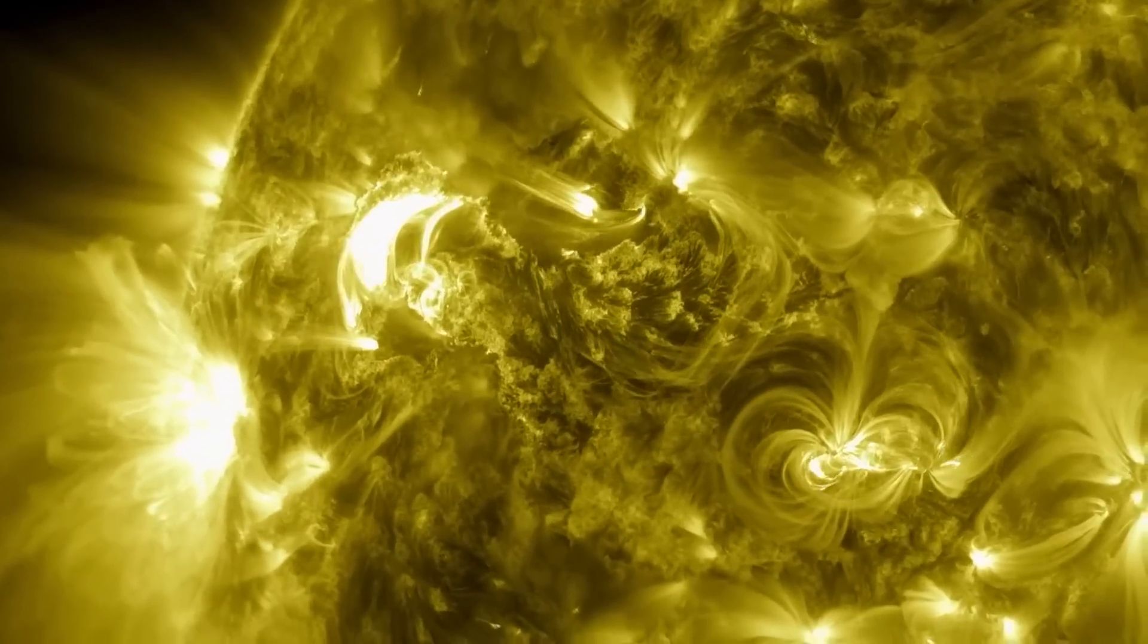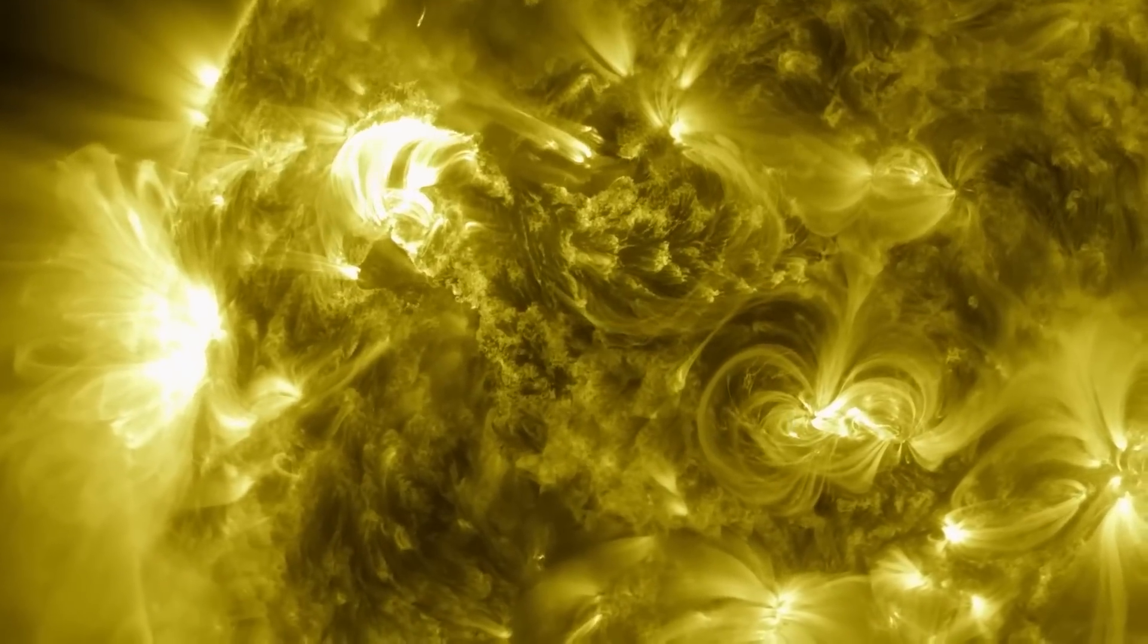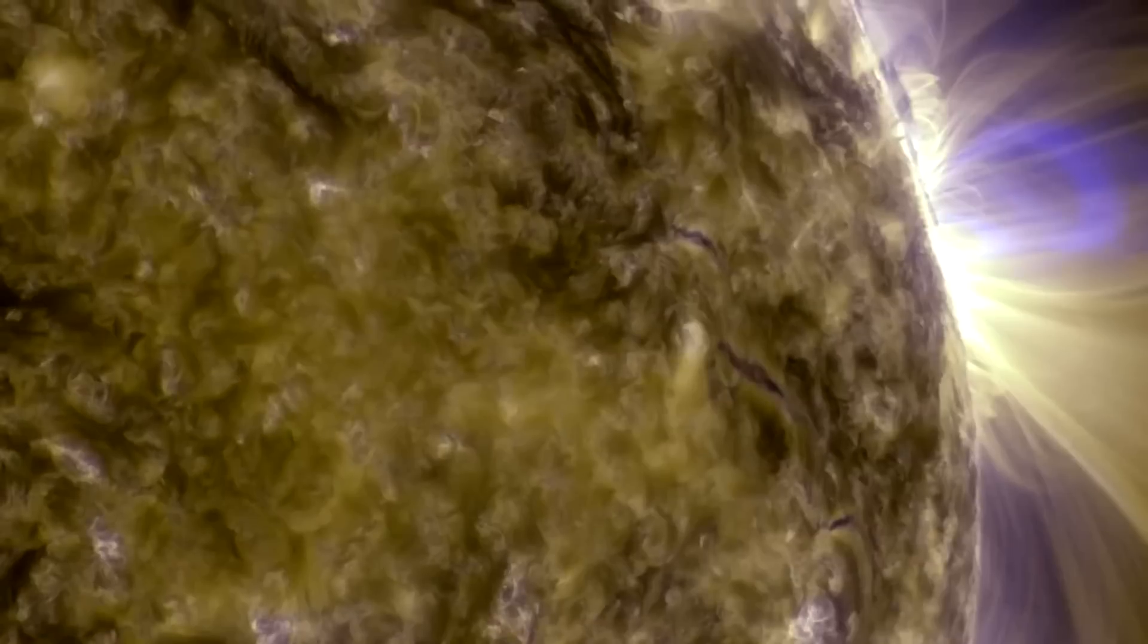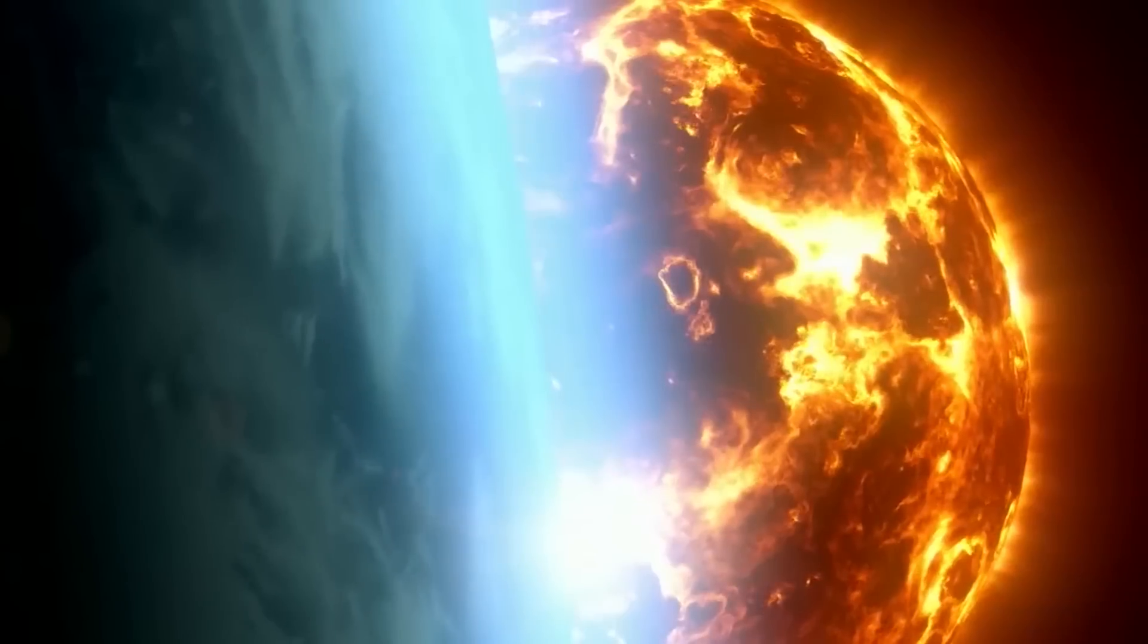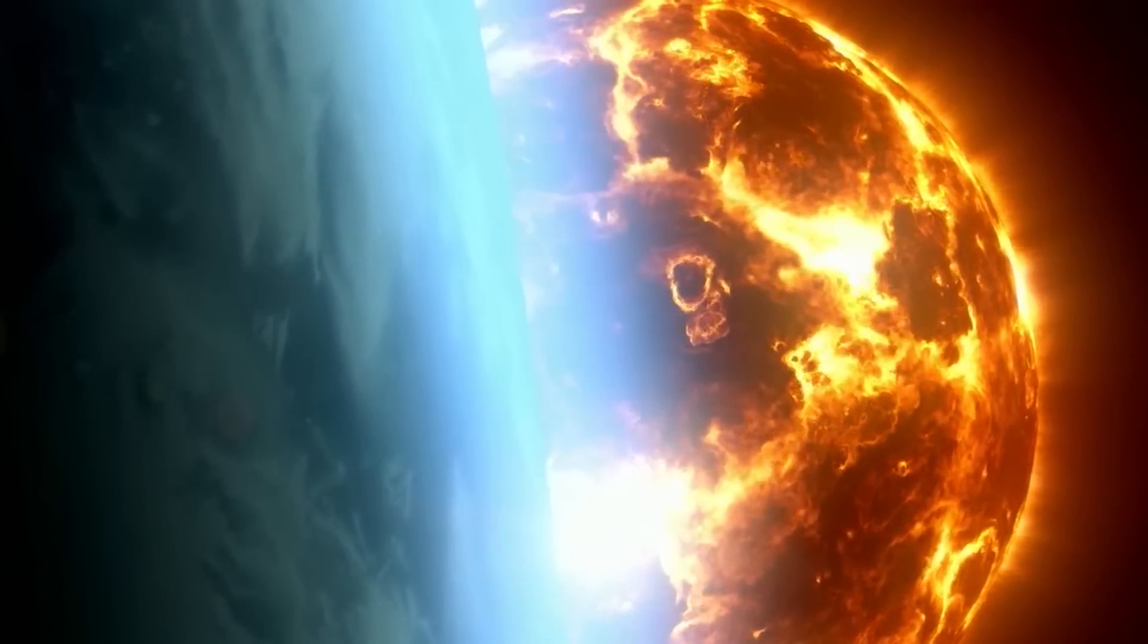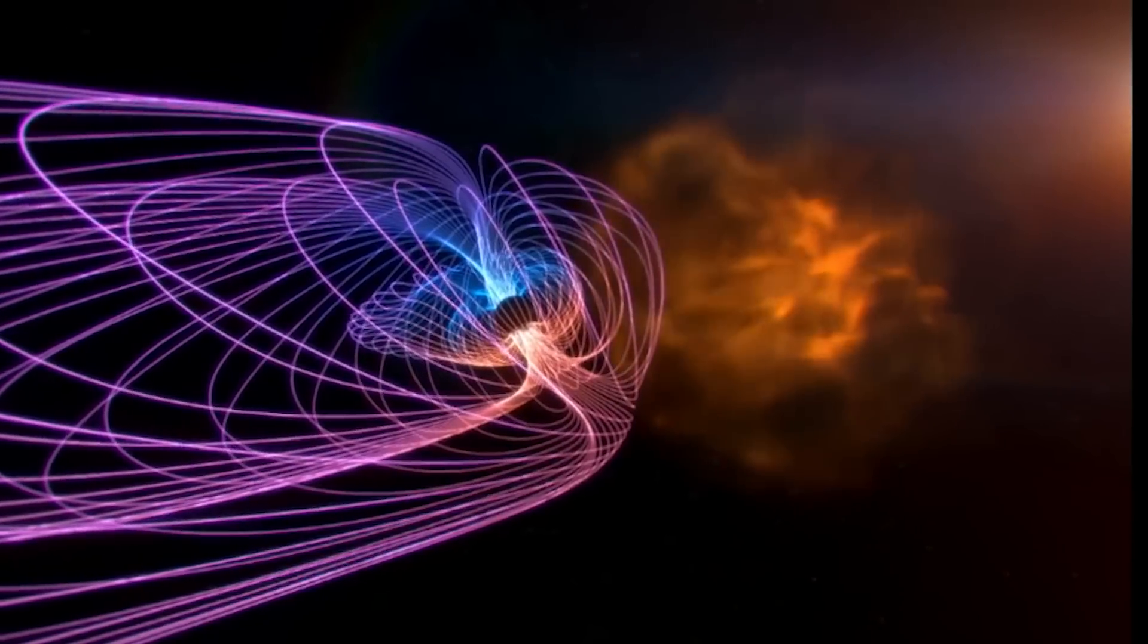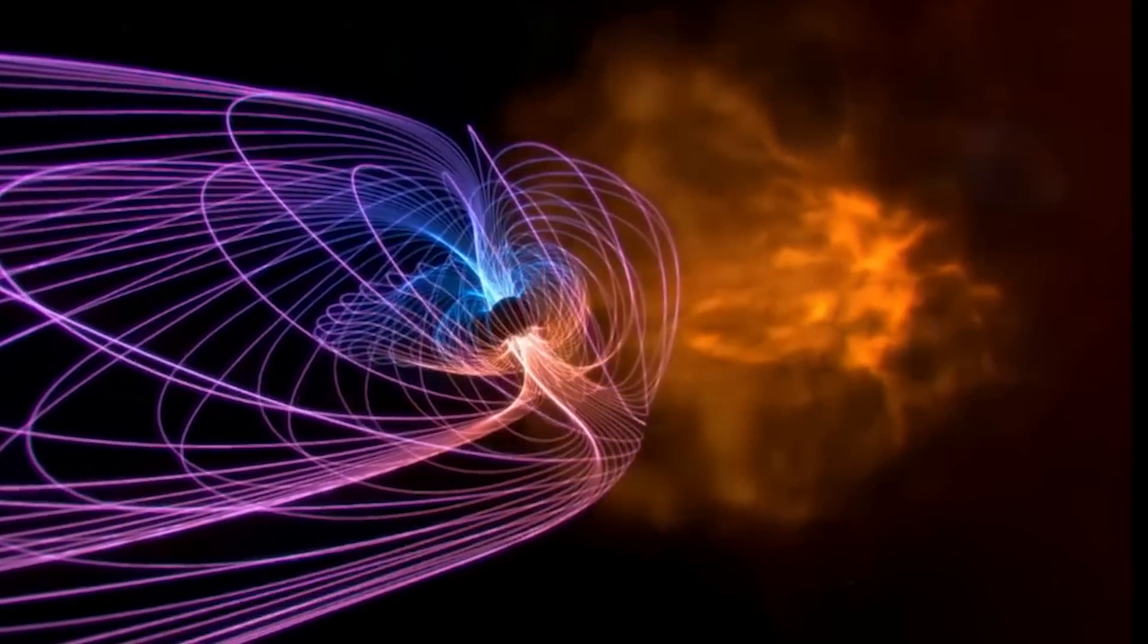As CMEs travel away from the Sun after they are launched, they expand in size. Some of the larger ones can fill nearly one-quarter of the space between the Earth and the Sun by the time they reach our planet.